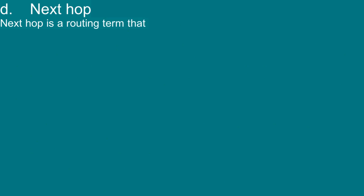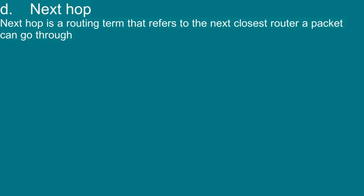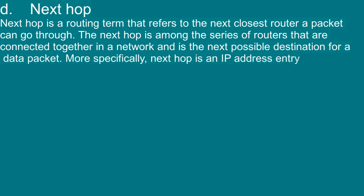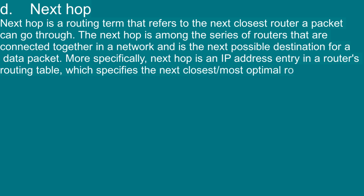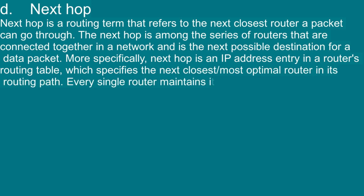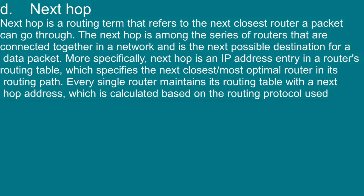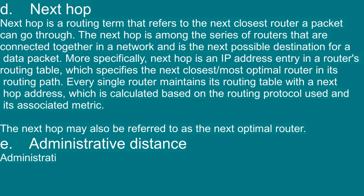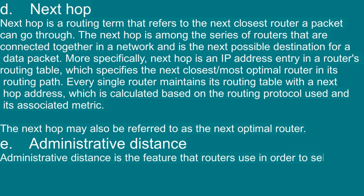D — NextHop: NextHop is a routing term that refers to the next closest router a packet can go through. The NextHop is among the series of routers connected together in a network and is the next possible destination for a data packet. More specifically, NextHop is an IP address entry in a router's routing table which specifies the next closest, most optimal router in its routing path. Every router maintains its routing table with a NextHop address, calculated based on the routing protocol and its associated metric. The NextHop may also be referred to as the next optimal router.